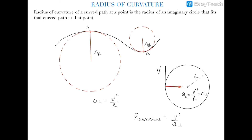This centripetal acceleration is equal to v² / r, where v is the instantaneous speed of the particle at that point and r is the radius. So the radius of curvature can be written as v² / a_perpendicular.